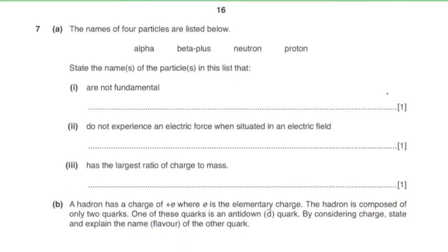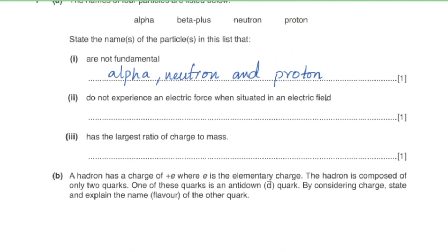Question seven, part a: from the list of four particles, those that are not fundamental are alpha, neutron, and proton. The particle that does not experience an electric force in an electric field is the neutron, as it carries no charge. The particle with the largest charge-to-mass ratio is the beta-plus particle, with a ratio of 1876.